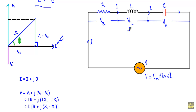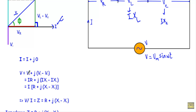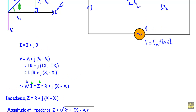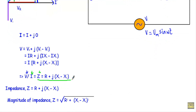Since this is an inductor, VL equals IXL, and since this is a capacitor, VC equals IXC. Substituting these values: V equals IR + j(IXL − IXC). Taking I common from all three terms gives V equals I(R + j(XL − XC)). Therefore the impedance Z equals V/I equals R + j(XL − XC). This is the impedance of a series RLC circuit and is the general formula.